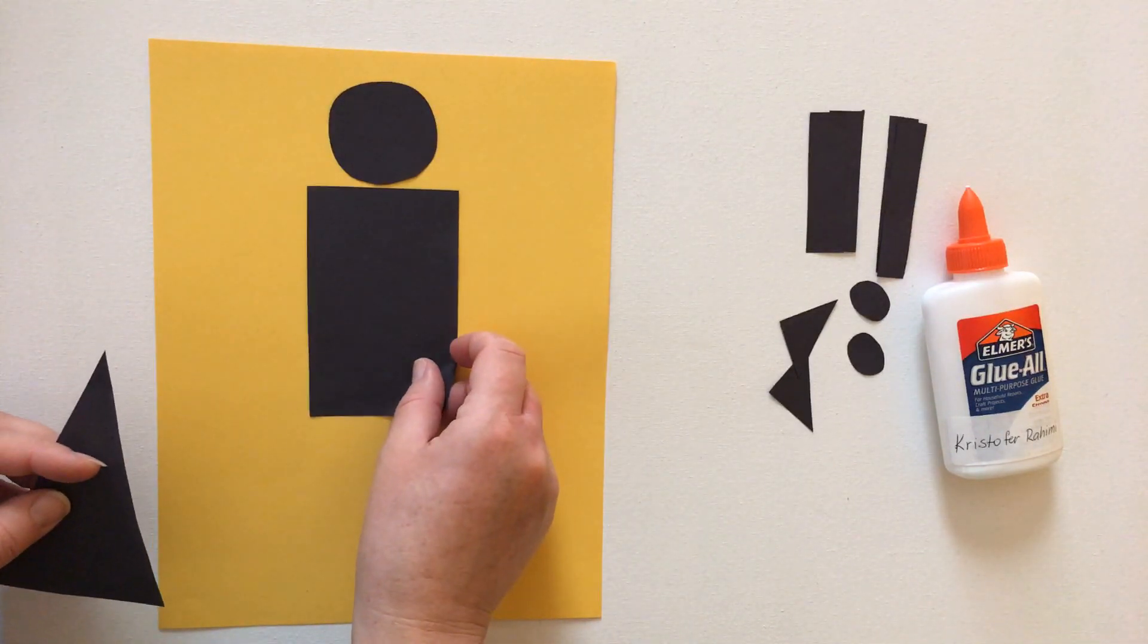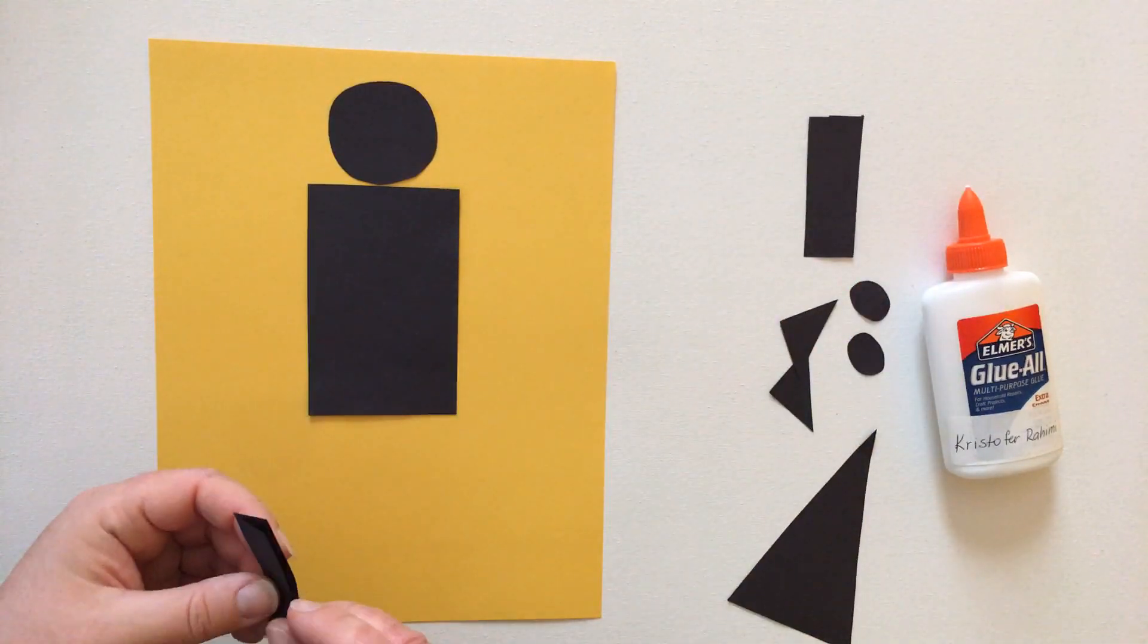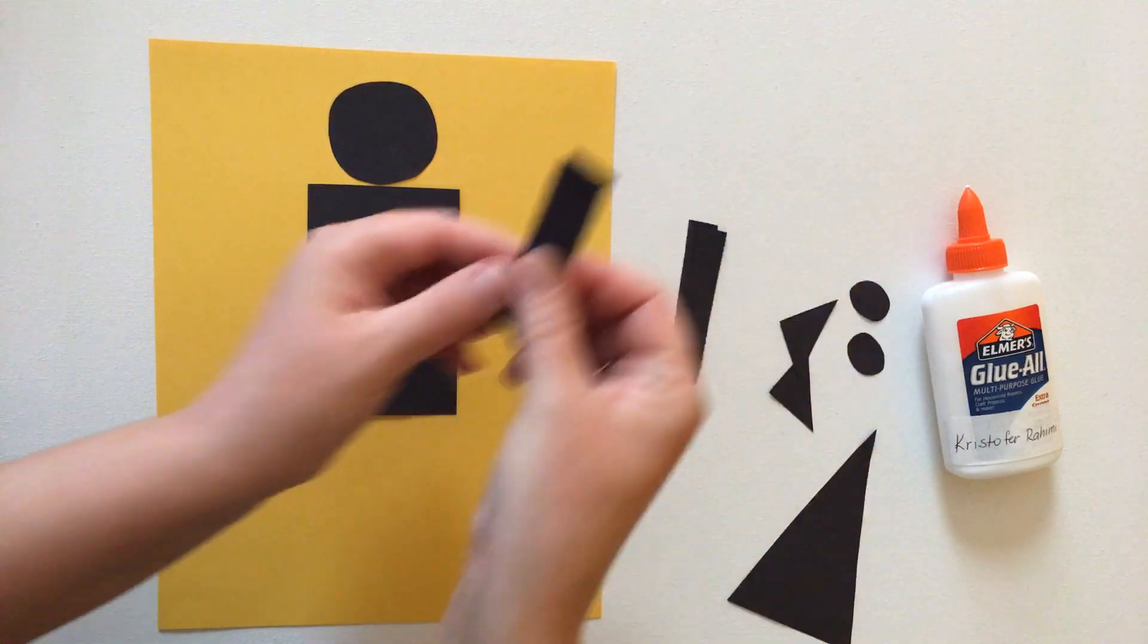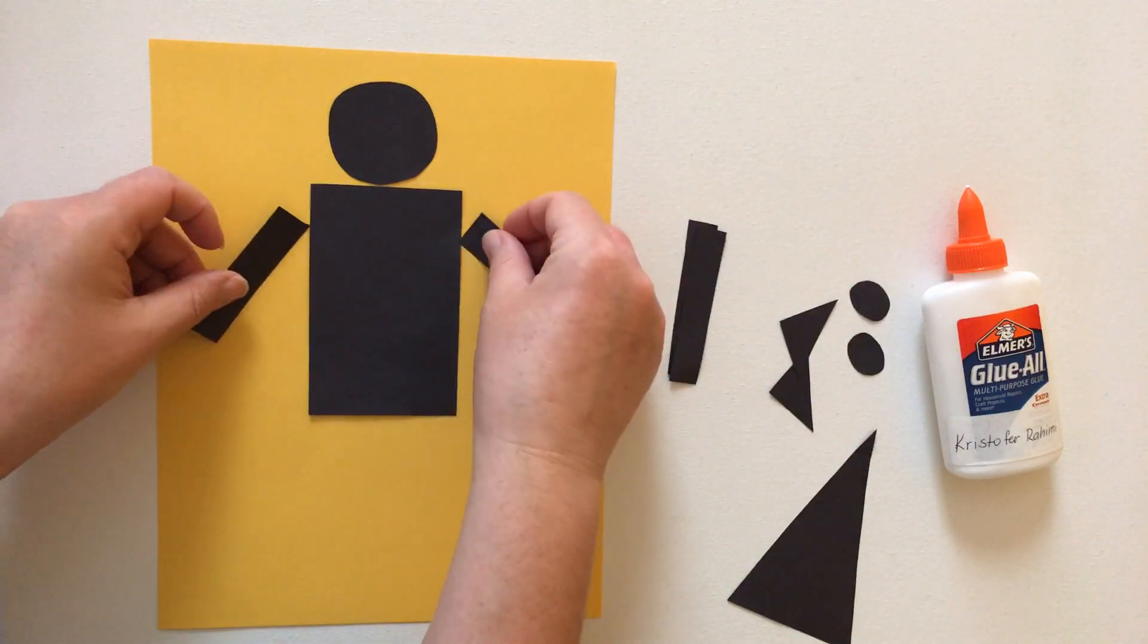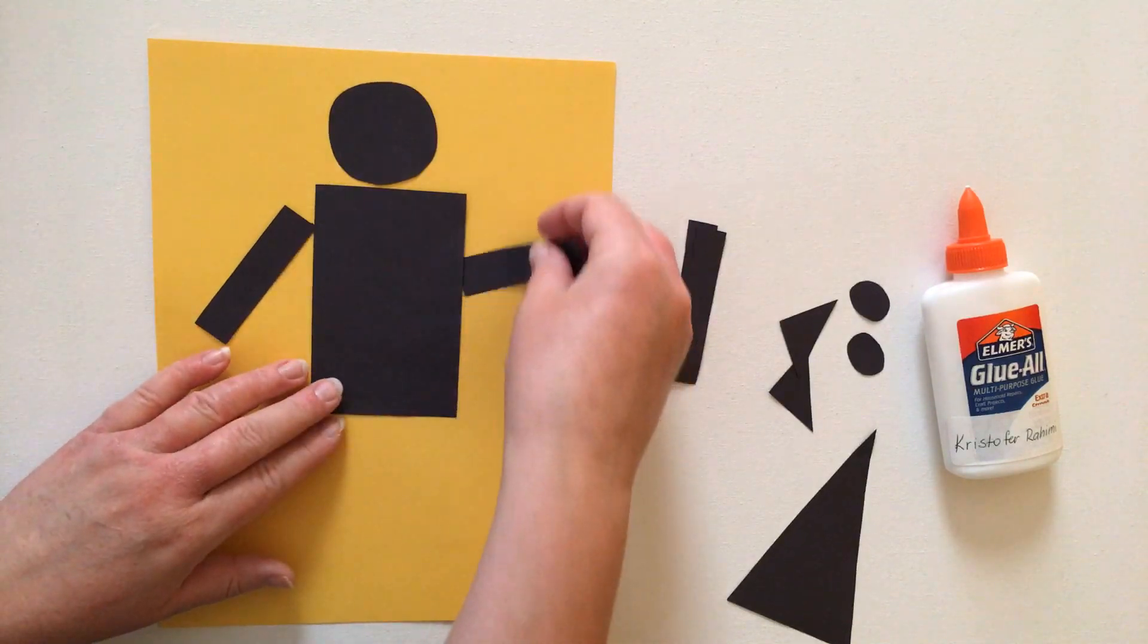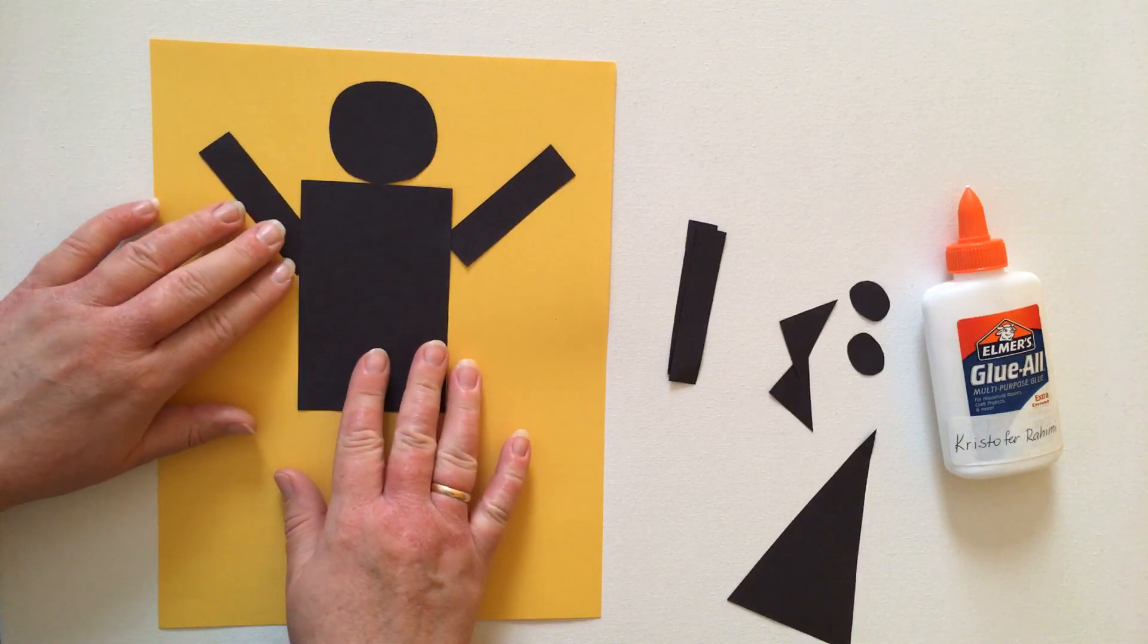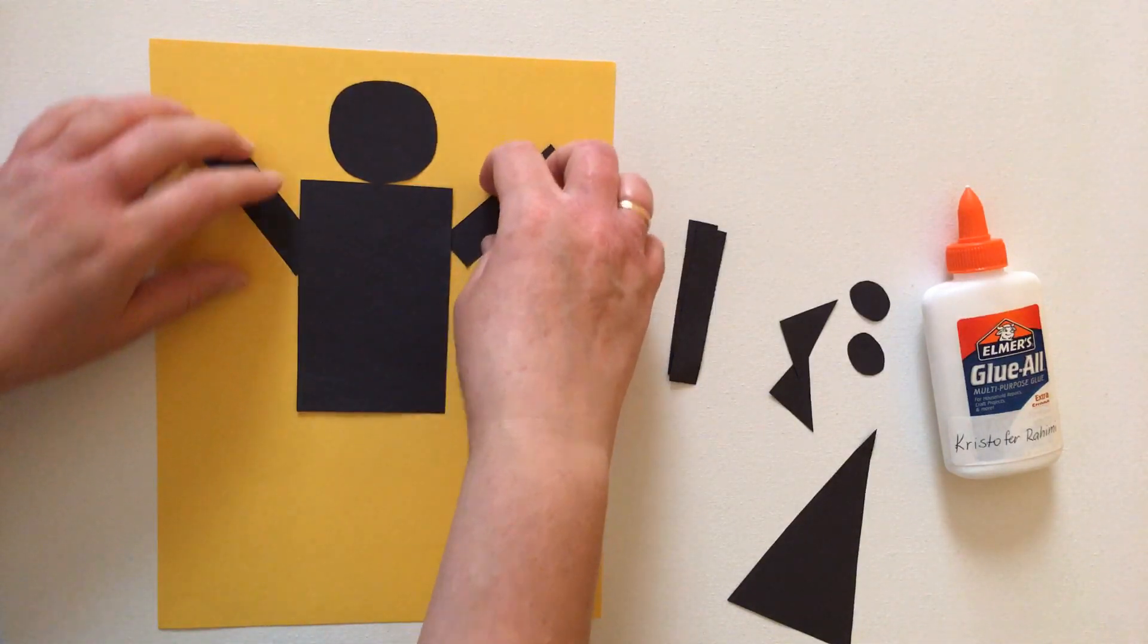So I'm gonna do a rectangle over here, and then I'm gonna be needing some arms. The arms can stay down, the arm can say hi, or both arms can stay up and say hooray, whichever way.